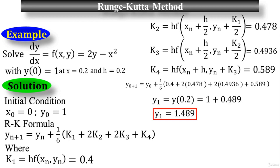This problem took only one step to get the answer, because the value of x₁ = 0.2 equals the step size h = 0.2. In the next lecture, I will do one more tutorial where the problem takes two steps to get the final answer.